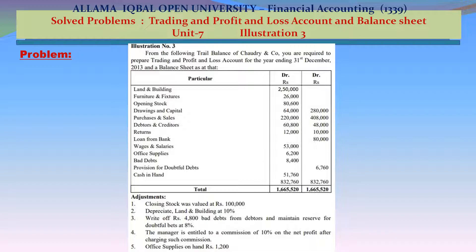Particulars — Debit and Credit: Land & Buildings debit 250,000; Furniture & Fixtures debit 26,000; Opening Stock debit 80,600; Drawings & Capital 64,000 and 280,000 respectively; Purchases & Sales 220,000 and 408,000 respectively; Debtors & Creditors 60,800 and 48,000 respectively; Returns 12,000 and 10,000 respectively; Loan from Bank 80,000 credit; Cash in Hand 51,760.